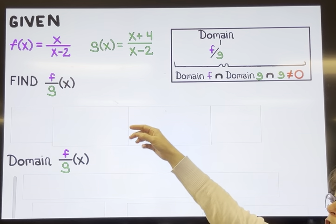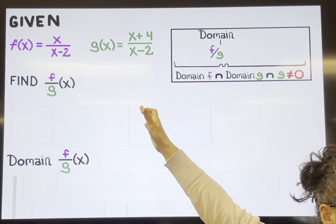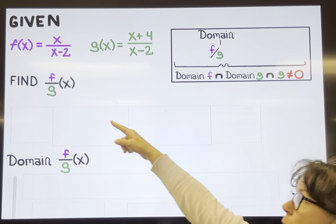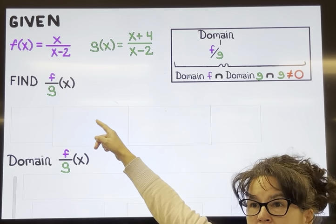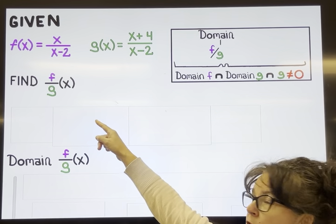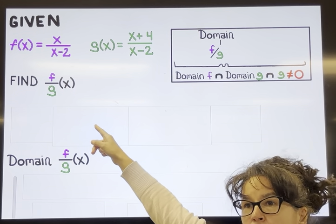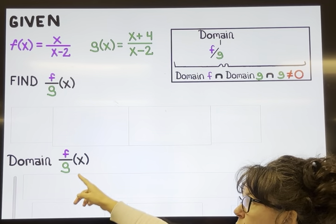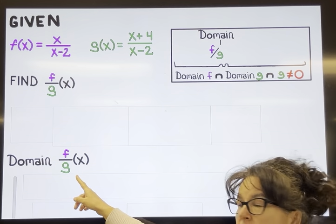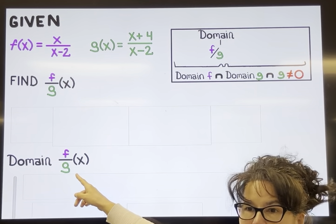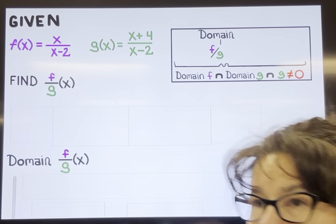We've been given two functions f(x) and g(x). We want to first find f divided by g of x, and after we find that, we want to find the domain of f divided by g of x.